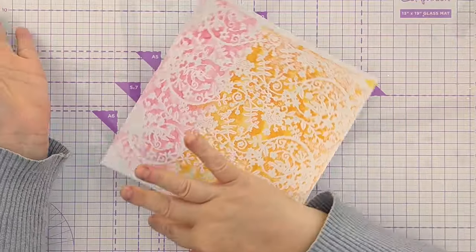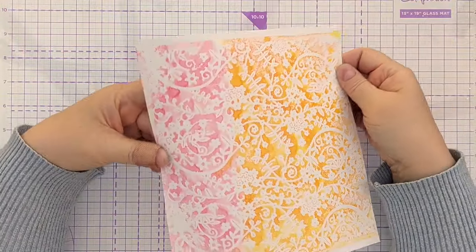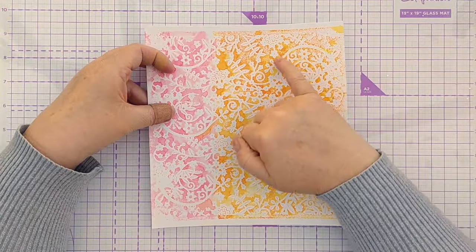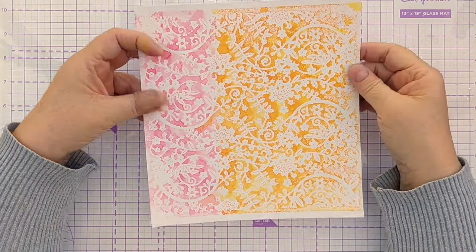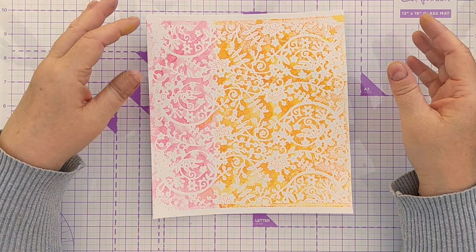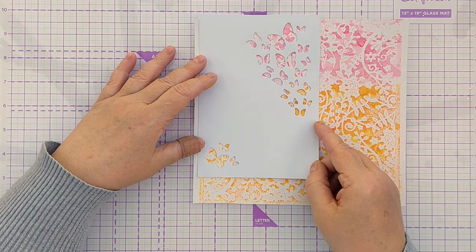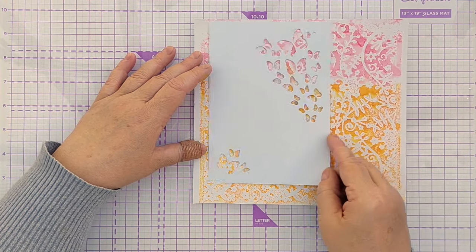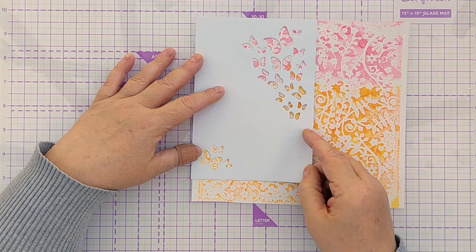Obviously you can ink up the other side of the embossing folder and then you'll get colour on the pattern rather than on the background. But I wanted the colour on the background so I had lots of colour rather than lots of white if you can see what I mean. I'm just thinking which bit to take from. I don't think it really matters. I think we will do something like that.